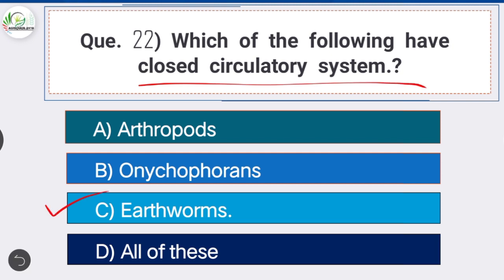Option C is the correct answer: earthworms. Earthworms have a closed circulatory system; blood circulates exclusively through vessels. There are three main vessels that supply blood to organs within the earthworm.